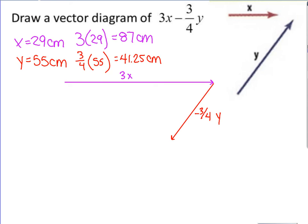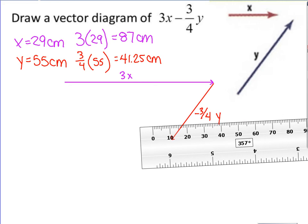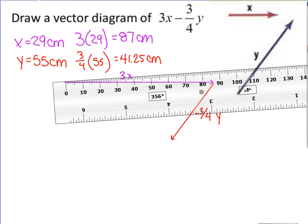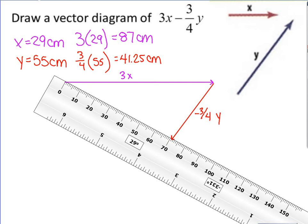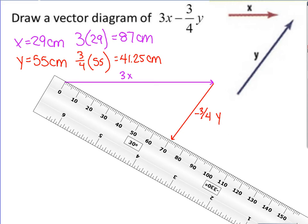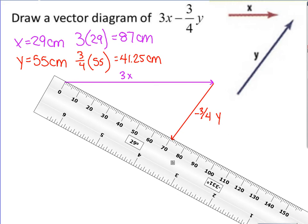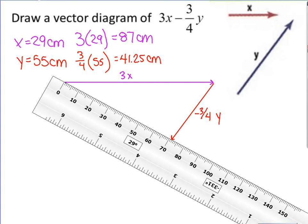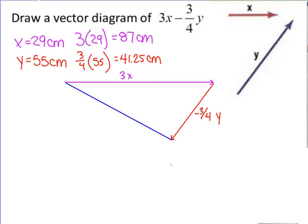So our resultant vector - you start at the beginning of your first vector, go to the end of your second vector, and you just connect them from the beginning of the first to the end of the second. And this is 3x minus three-fourths y.